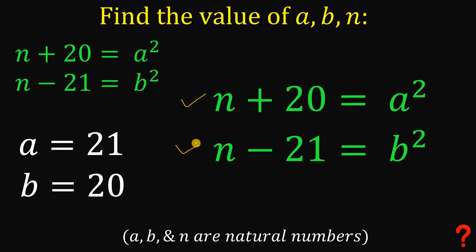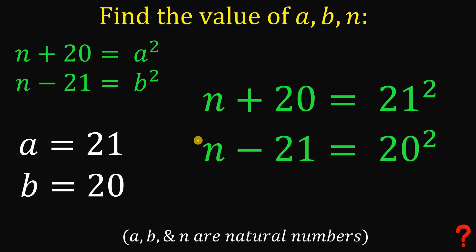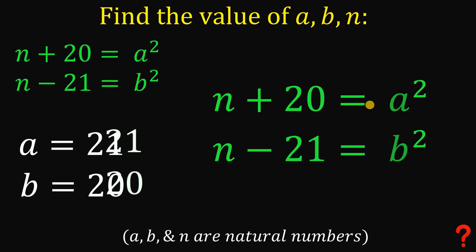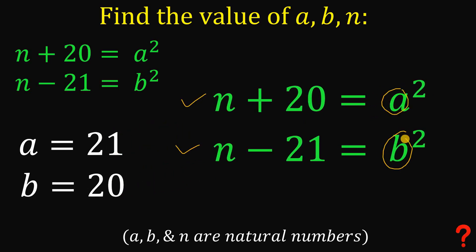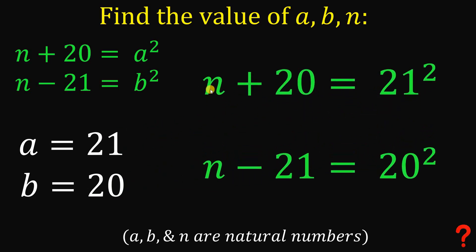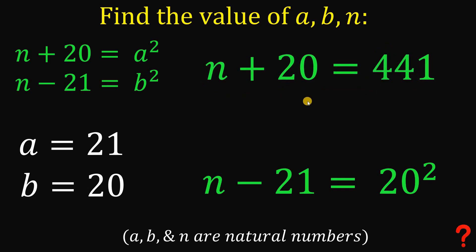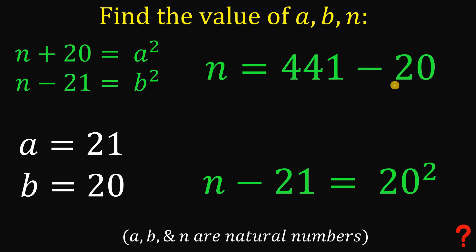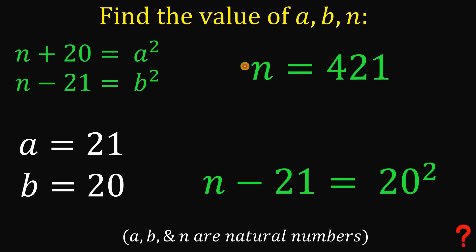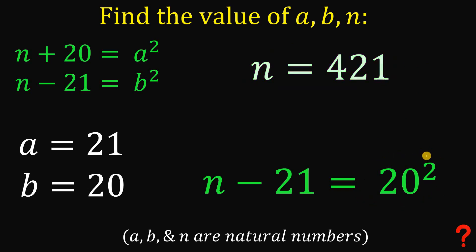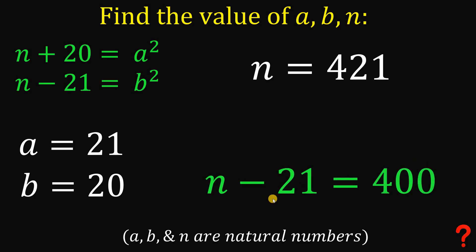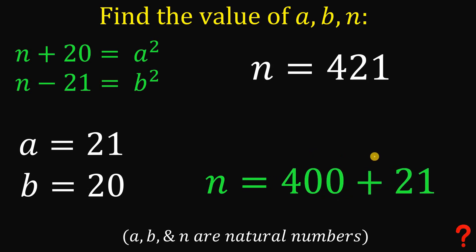Now let's use a equals 21 and b equals 20 to solve for n. Using the first equation: 21 squared equals 441, and 441 minus 20 equals 421, so n equals 421. Checking with the second equation: 20 squared equals 400, and 400 plus 21 also equals 421. Both equations give the same value for n.